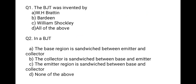The first question is: the BJT was invented by — first option WH Brattain, second Bardeen, third William Shockley, and fourth all of the above. We know that BJT means Bipolar Junction Transistor, and this transistor was invented by WH Brattain, Bardeen, and William Shockley. So the correct option is D, all of the above.